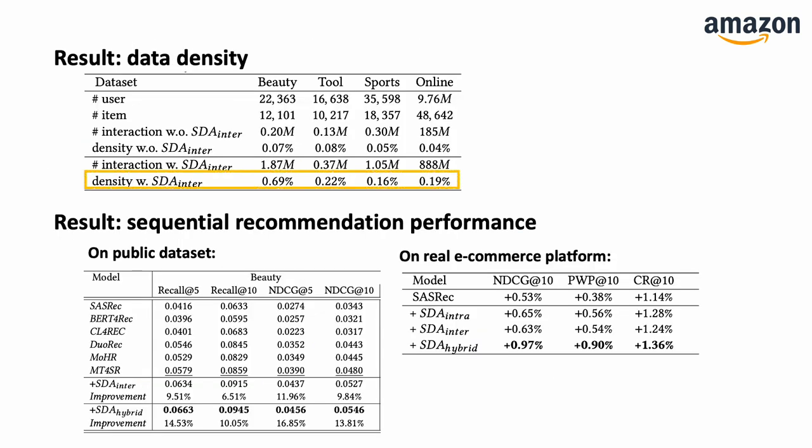From the experimental results, we first observed that data density increased. Regarding recommendation performance, on Amazon Beauty, inter-sequence data augmentation improved the NDCG at 5 by about 12%. Additionally, inter-sequence augmentation is complementary with intra-sequence augmentation like masking and cropping. Applying both augmentations, the NDCG at 5 is improved by more than 16%. Our method also showed great impact on a real e-commerce platform, with features built with our method contributing more to conversion rate and annual purchases.